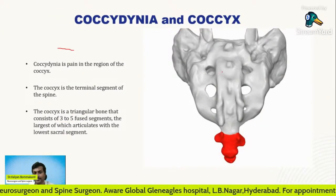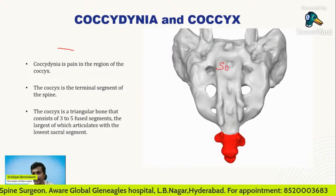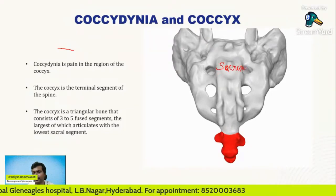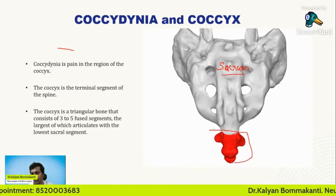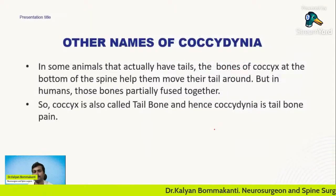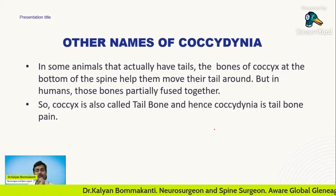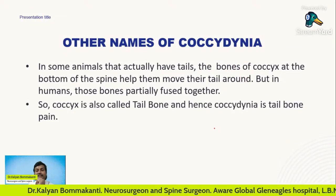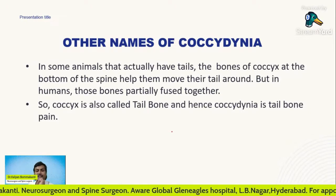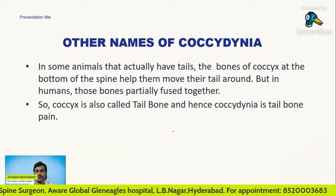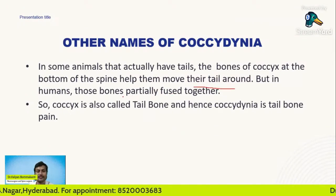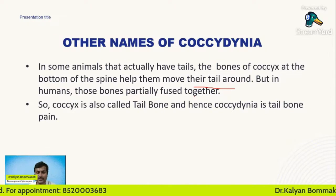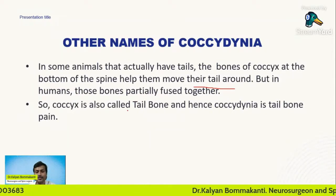This is known as our sacrum — the portion of bone just above the coccyx. And this terminal piece of bone is known as the coccyx. In some animals that actually have tails, the bones of the coccyx at the bottom of the spine help them move their tail around. But in humans, those bones are partially fused together. So coccyx is analogous to the tailbone, and hence it is also called tailbone pain.